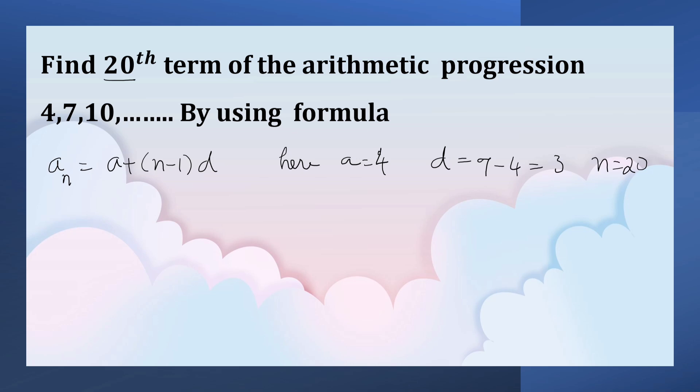Now, let us substitute the values in the formula. A₂₀ = 4 + (20-1) × 3.